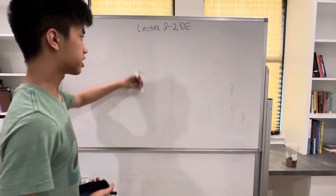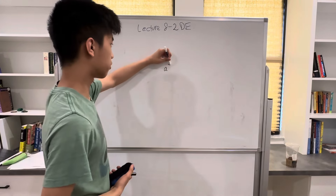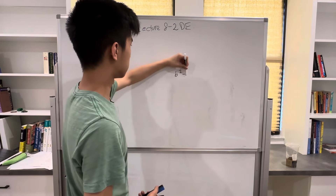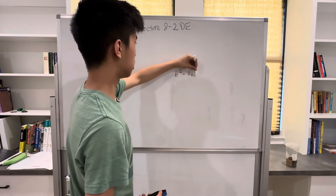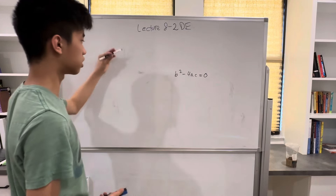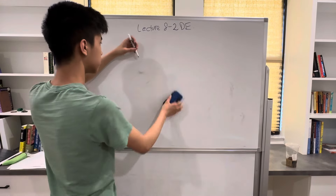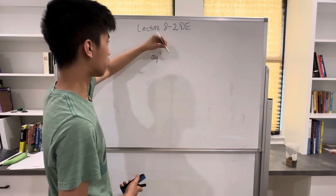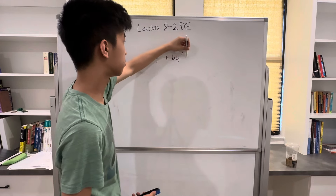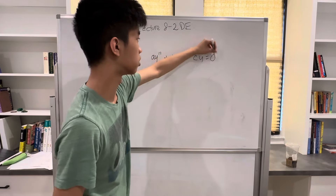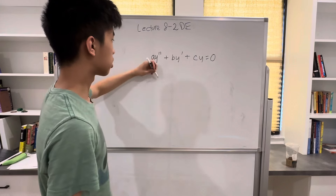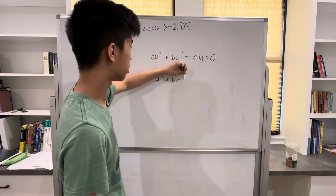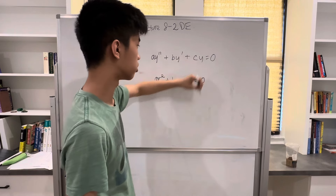In this video I'll be covering the case where the discriminant from the characteristic equation is equal to zero. So let's say we have the differential equation ay'' + by' + cy = 0. Then we can convert this to the characteristic equation ar² + br + c = 0.